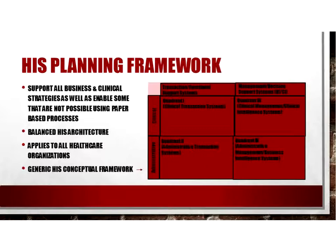There are four quadrants. Quadrant one, in the clinical row, covers transactional activities — clinical transaction systems. Quadrant two, in the administrative row, covers day-to-day transactions for institutional business activities. Quadrant three, in the clinical row, covers reporting and analytical capabilities for clinical activities, including clinical management and clinical intelligence systems. Quadrant four, in the administrative level, covers management reporting capabilities for the business and administrative aspects of the organization.